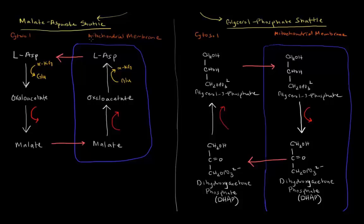These two shuttle mechanisms are the malate aspartate shuttle and the glycerol phosphate shuttle. In the malate aspartate shuttle, essentially what's going on is that if we have aspartate in the cytosol, L-aspartate,